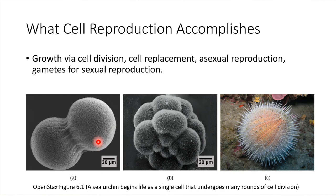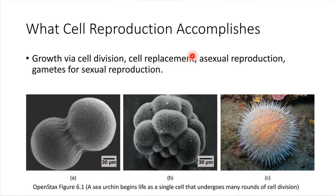Cell division is what allows that whole growth process to happen. Even in a full grown sea urchin, just like in a full grown adult, there's still a lot of cell division that has to take place. There will be cells on the surface that start to get some damage and need to be replaced. So cell replacement is another thing that can be accomplished by cell reproduction.